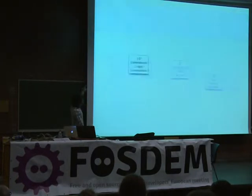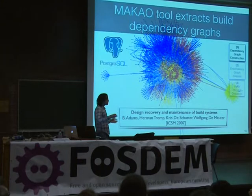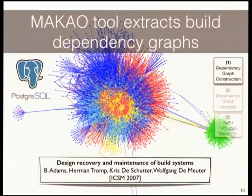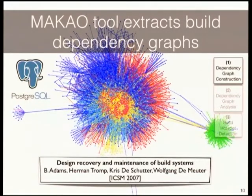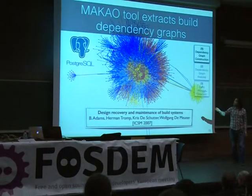First, we extract the dependency graph from your software system. For this, we use a tool called Macal, which looks at the debug output of the make instantiation and produces a graph. On the outside are the source code files — no edges going into them, so they aren't generated by anything make does. As you move further into the middle of the graph, that's where everything comes together and gets linked.